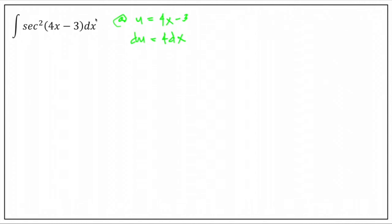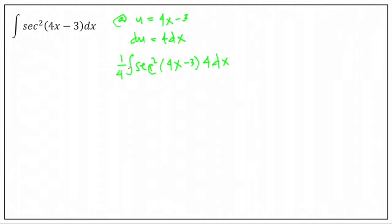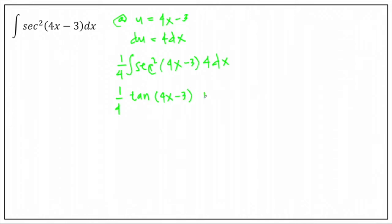But we can only see dx. We need to introduce a constant 4 into the function. So this will become sec squared of (4x minus 3); we introduce 4 and balance it with a factor of 1 over 4, so there are no changes in the equation. We can now apply the formula: the result is one-fourth tangent of (4x minus 3) plus the arbitrary constant c.